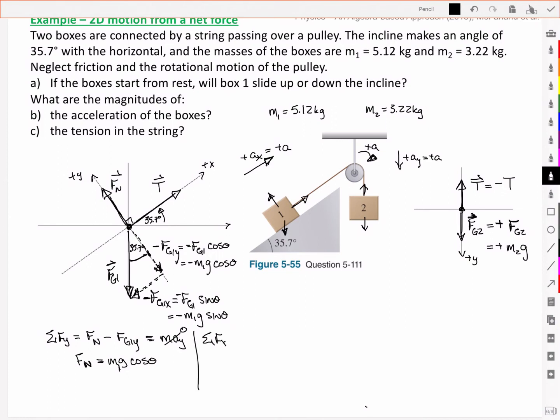In my x direction, then I have a positive t for the tension. And I've got a component of the gravity, negative Fg1x. And that's going to be equal to my acceleration in that direction. And I said I'm going to define that as simply a. And so I have this expression then. The tension minus M1g sin theta is equal to M1a. Or the tension is equal to M1a plus M1g sin theta.